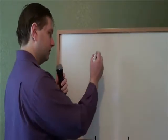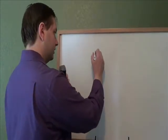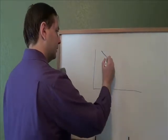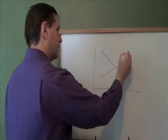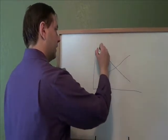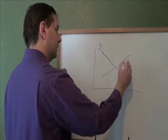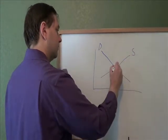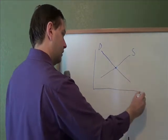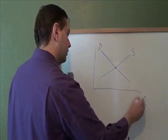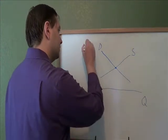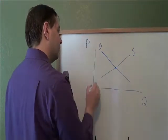In economics, your supply and demand graph always looks like this. You have demand downward sloping, supply upward sloping, and equilibrium where they meet. Quantity always goes along the bottom — the x-axis — and price goes along the side — the y-axis.